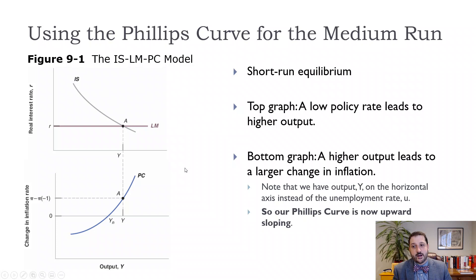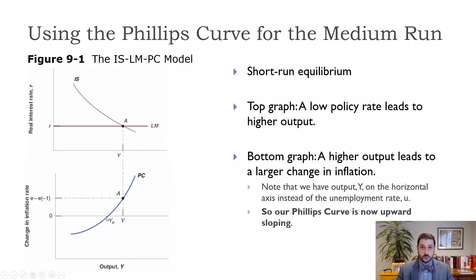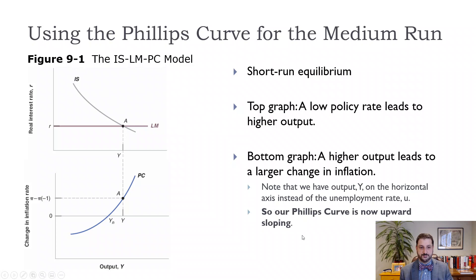This Phillips curve is flipped compared to the one in Chapter 8 because we put output on the horizontal axis instead of the unemployment rate. When output is higher, the unemployment rate is lower, so instead of a downward-sloping Phillips curve, we have an upward-sloping one. We did this because our IS-LM model has output on the horizontal axis and we want to graph them together. On the vertical axis, we now have the change in the inflation rate — the adaptive expectations Phillips curve that best fits the data since the 1970s. At point A, output is above the natural rate, so inflation is going to be increasing — we'll have higher inflation this year than last year.